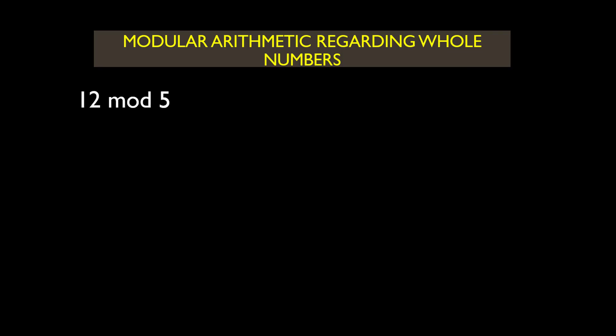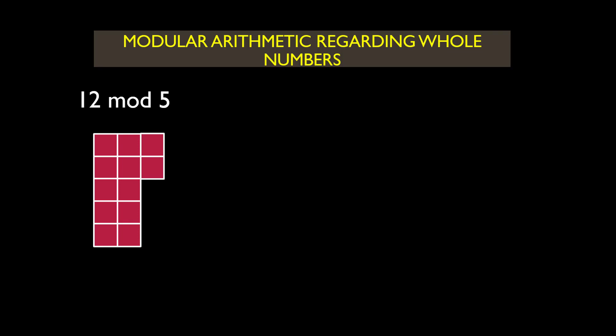Now let's look at 12 mod 5. If I have 5 cubes as you can see on the screen, the best thing to do experimentally is to simply add 5 cubes to itself until you arrive at a point where the remainder is observed. You see that 5 plus another 5 and then plus 2 will give you 12. The last set of cubes isn't up to 5, so 12 mod 5 is equal to 2. In other words, when I divide 12 by 5 I get 2 remainder 2.